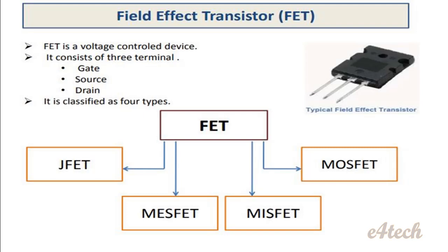FET is a Field Effect Transistor. It is a Voltage Controlled Device. And similar to BJT, FET is a three terminal device. BJT has emitter, base, and collector — three terminals. FET has Gate, Drain, and Source.